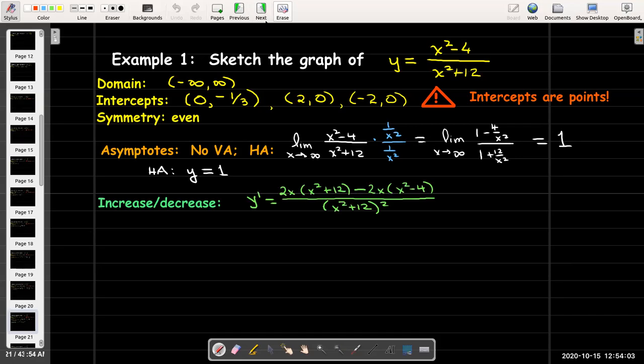To calculate the intervals of increase and decrease, we'll need to calculate the first derivative. I'm using the quotient rule. Derivative of the first is 2x. The top is 2x times the bottom minus the derivative of the bottom, which is also 2x, times the top, all over the bottom squared. I can go ahead and remove parentheses and collect like terms in the numerator. That simplifies to just 32x in the numerator.